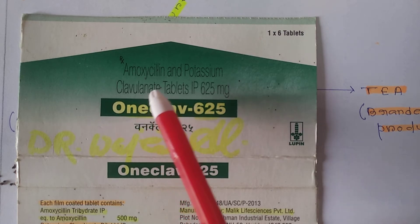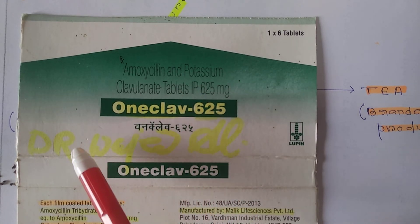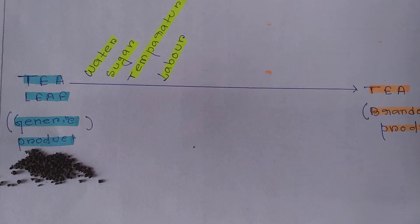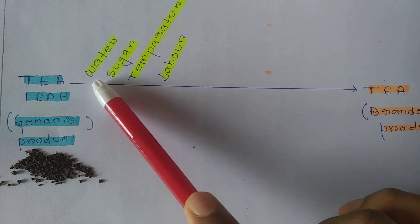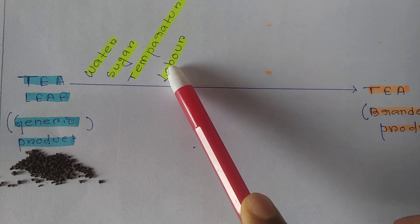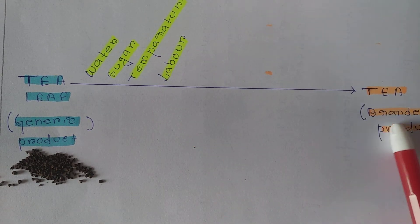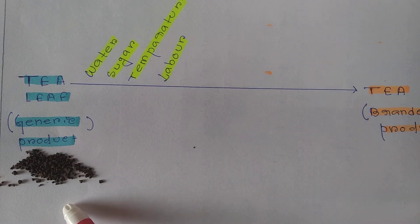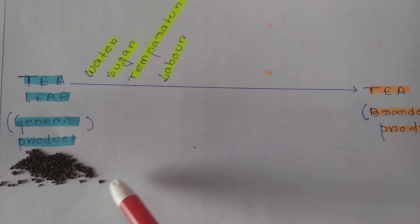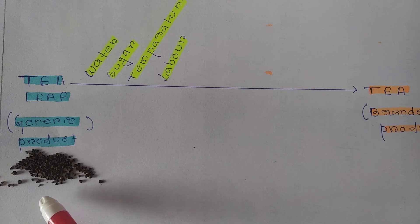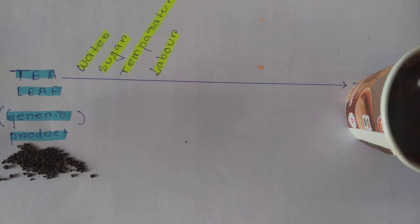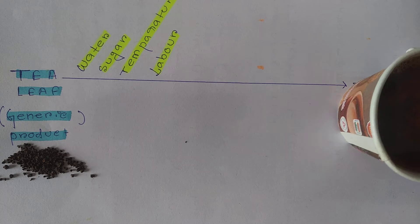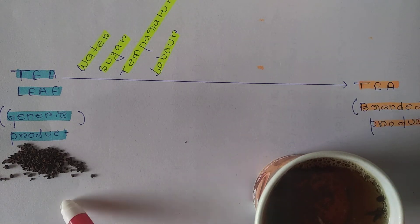If we want to know the difference between generic and branded, here is one example. There is a tea leaf — if that is a red-label tea leaf, then in the presence of water, sugar, and temperature along with labor, we prepare tea. Tea is the branded product and the raw form of the tea leaf is the generic product. The active constituent in both is tea leaf, so that is the real difference between generic and branded product.